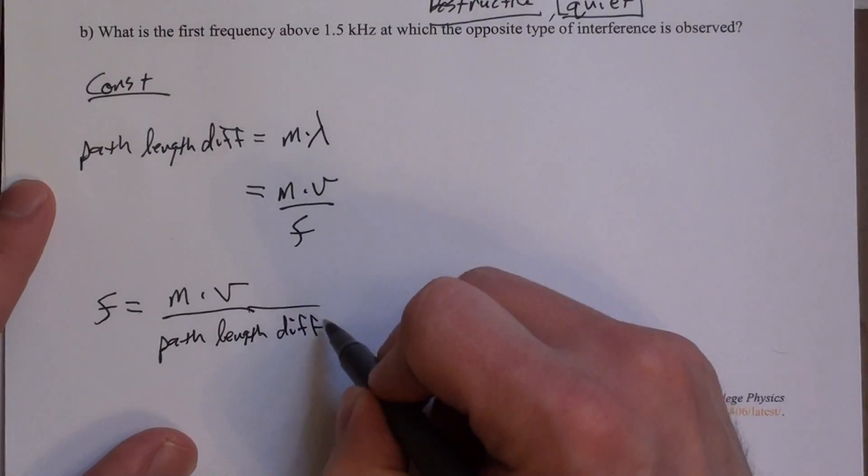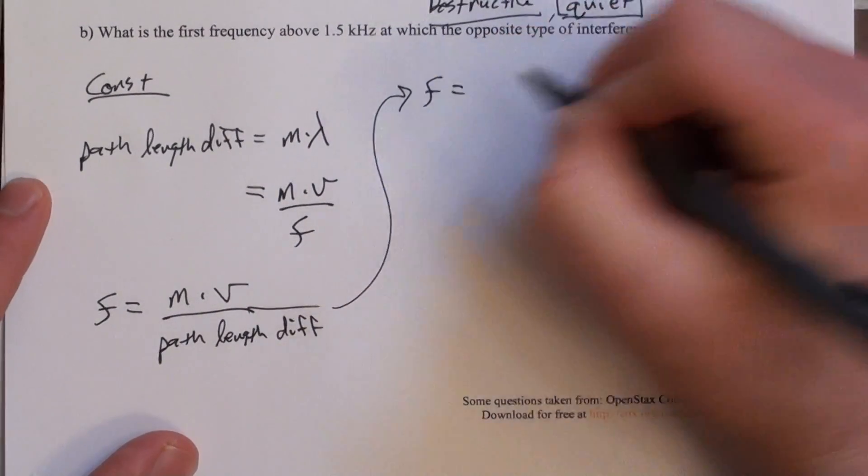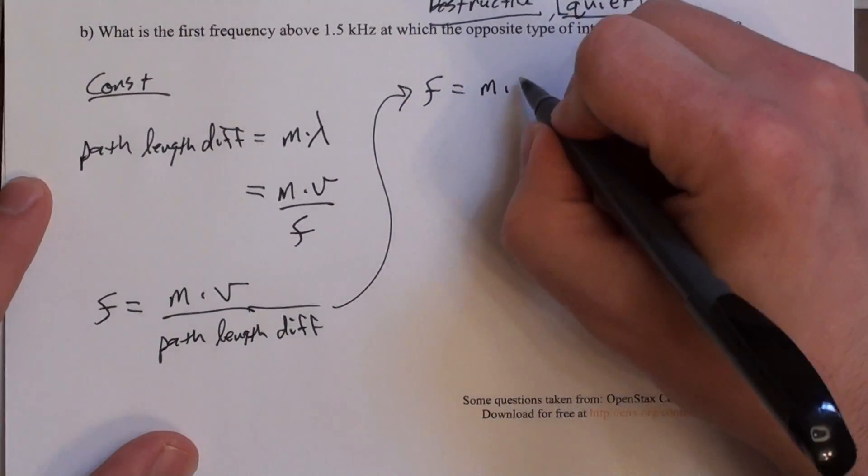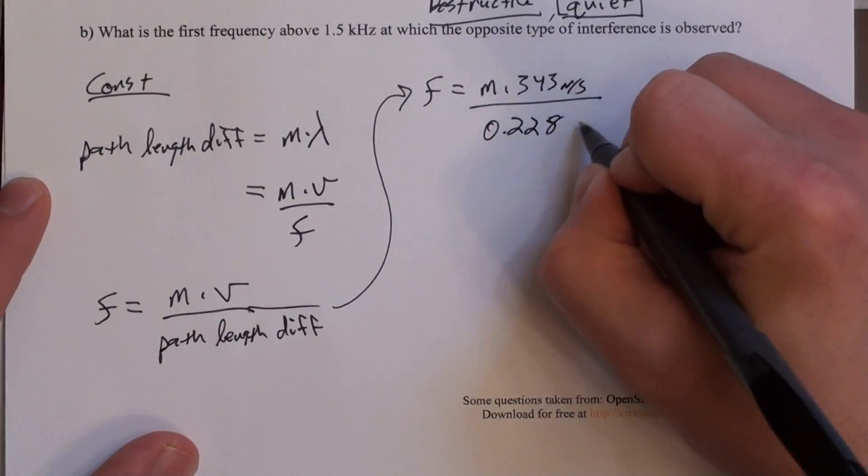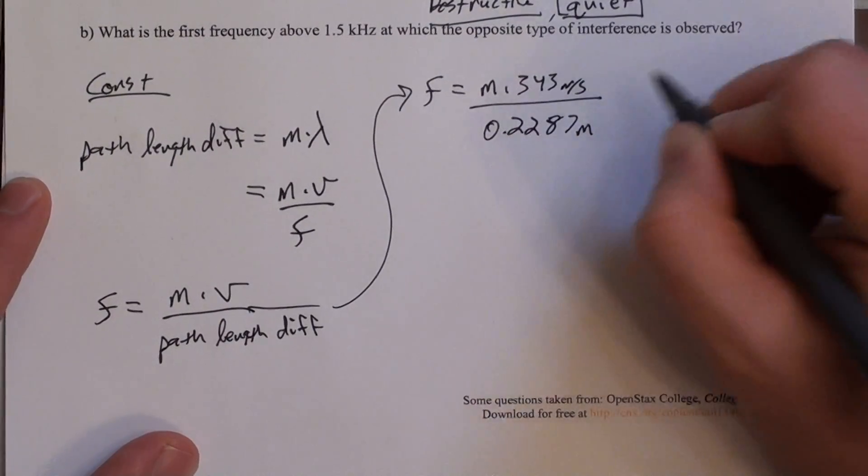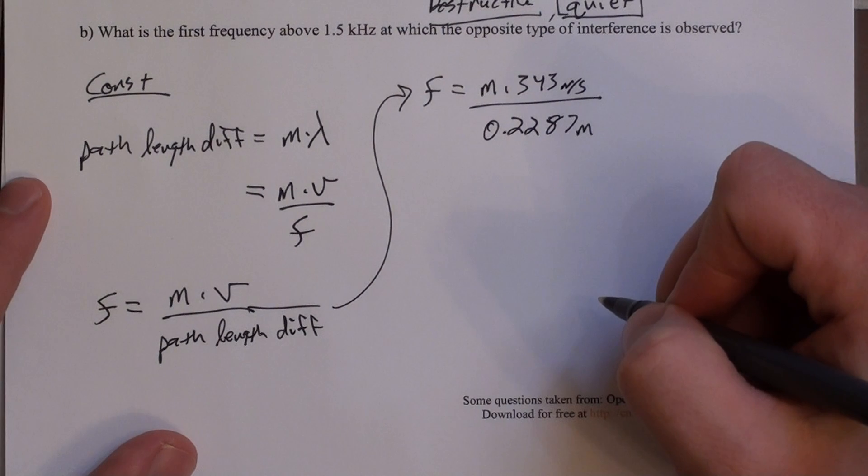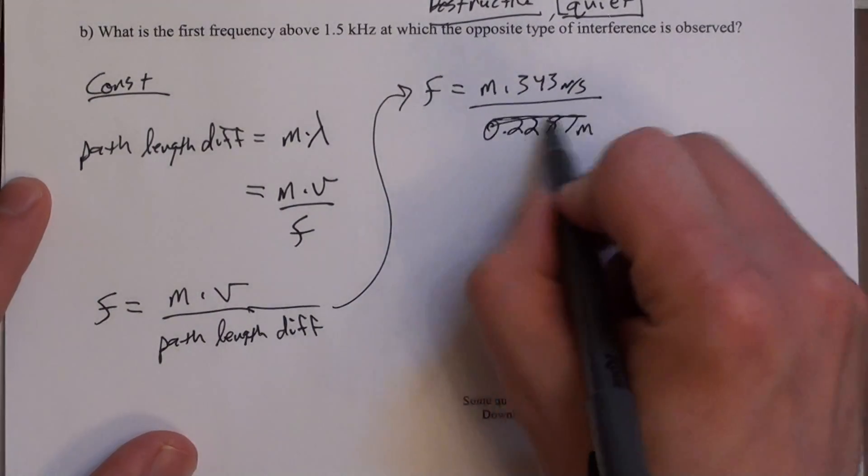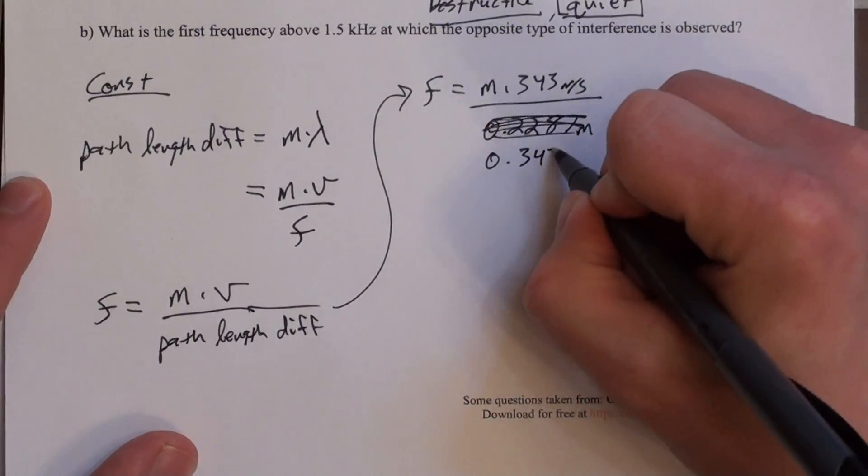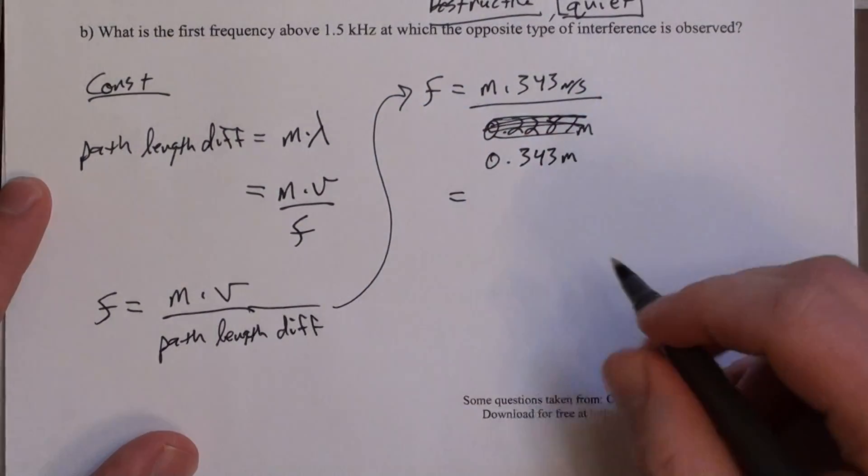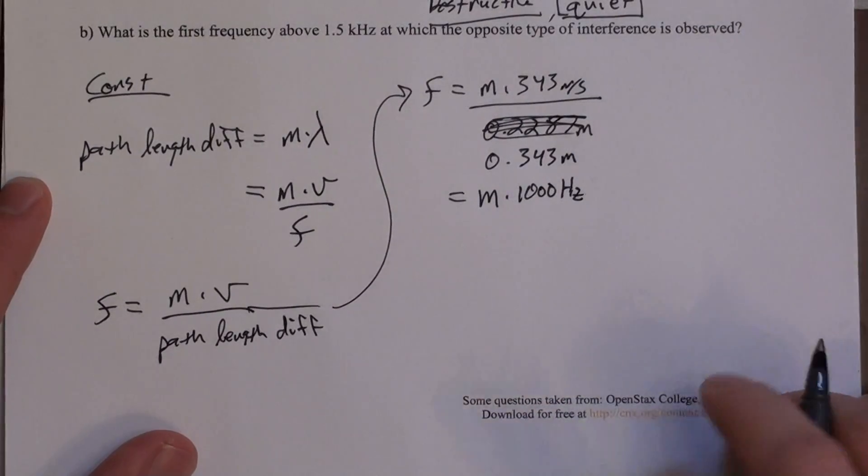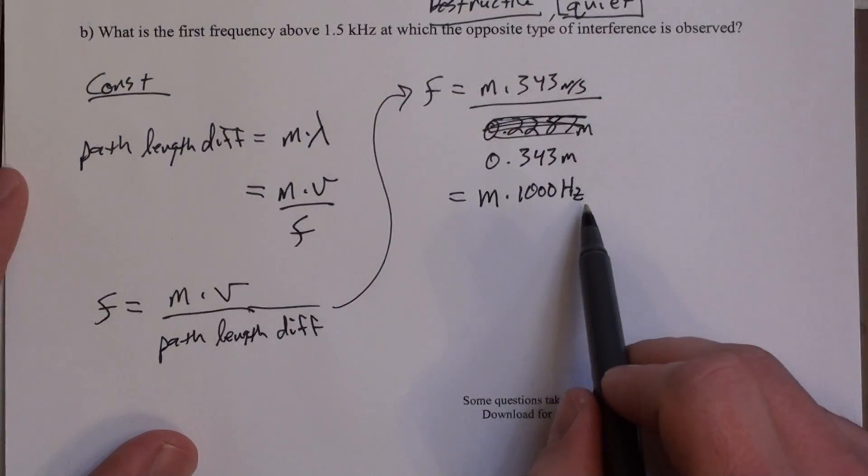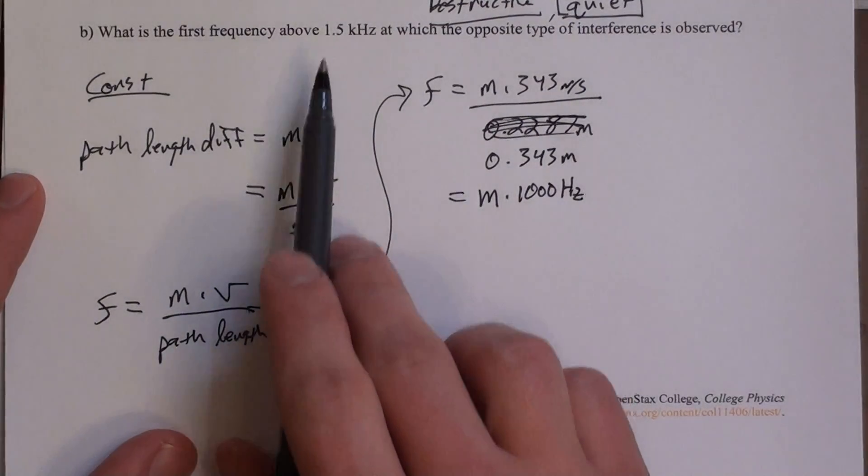So I actually have v in the path length difference, and m is just some integer, so we'll play with that in a minute. So we can plug these numbers in. So if we plug these numbers in, we leave m as m, v will be 343 meters per second, and the path length difference from above was 0.343 meters. So this is m times, it looks like it's a thousand, a thousand hertz. So that means a thousand hertz is a constructive frequency. But that's not above 1500 hertz.